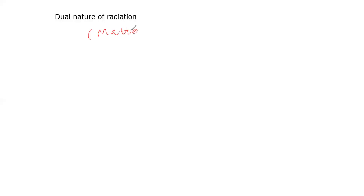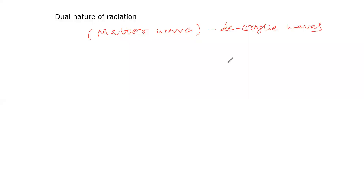If the wave is a particle, then the particle is a wave. If the particle is a wave, then that wave is called a matter wave. Matter waves are called de Broglie waves.